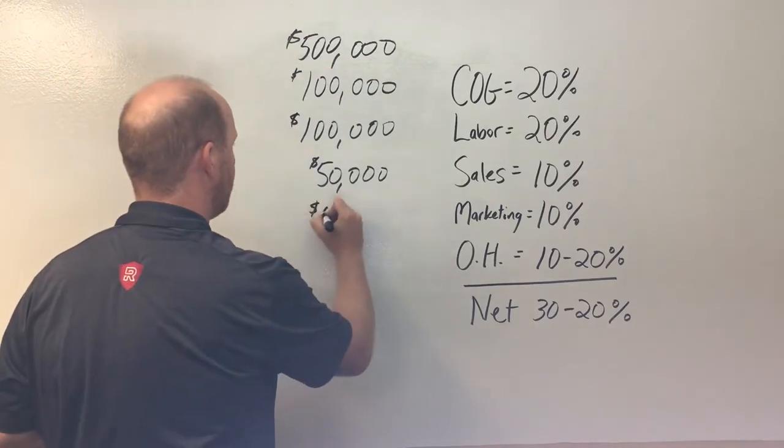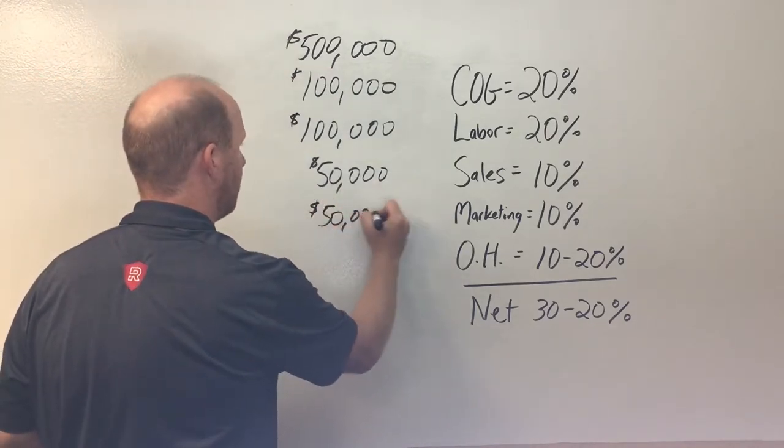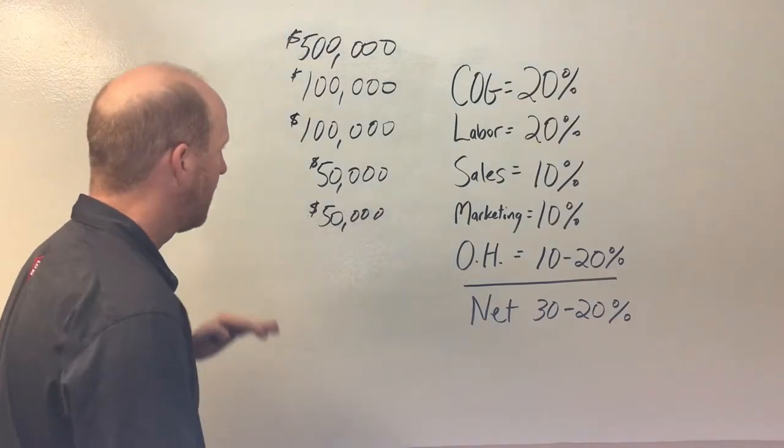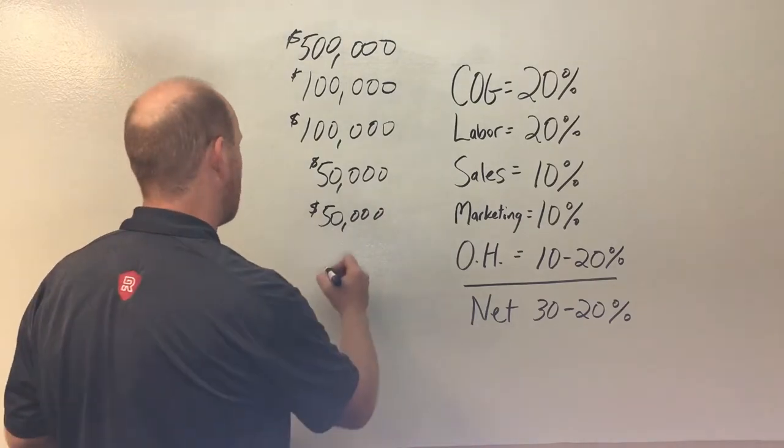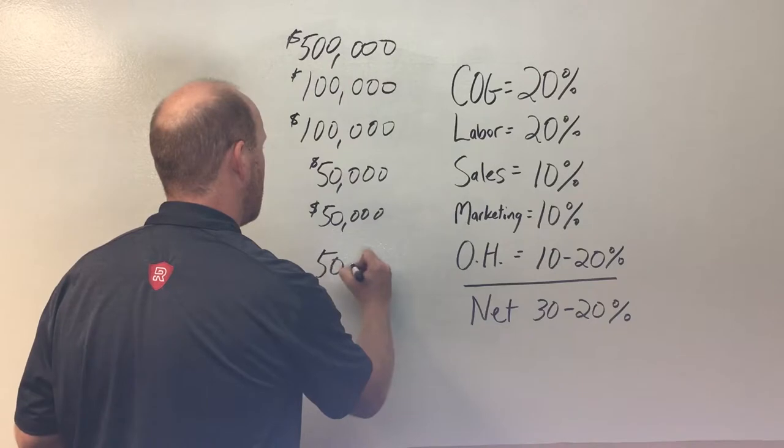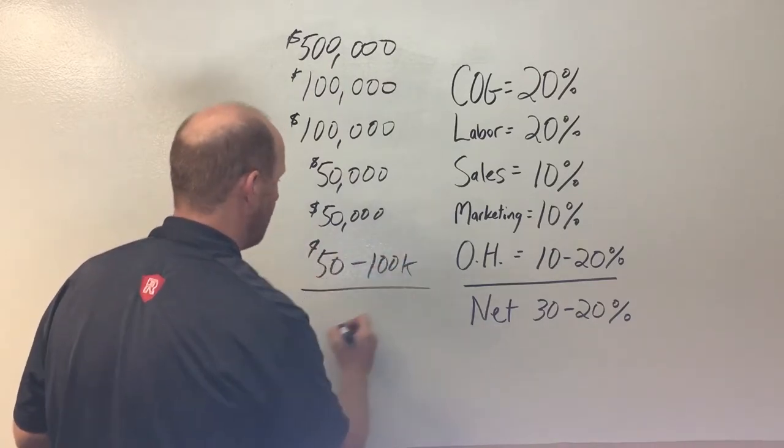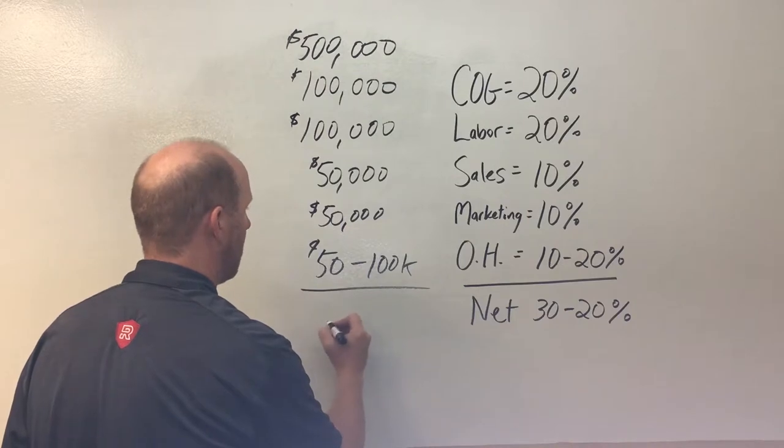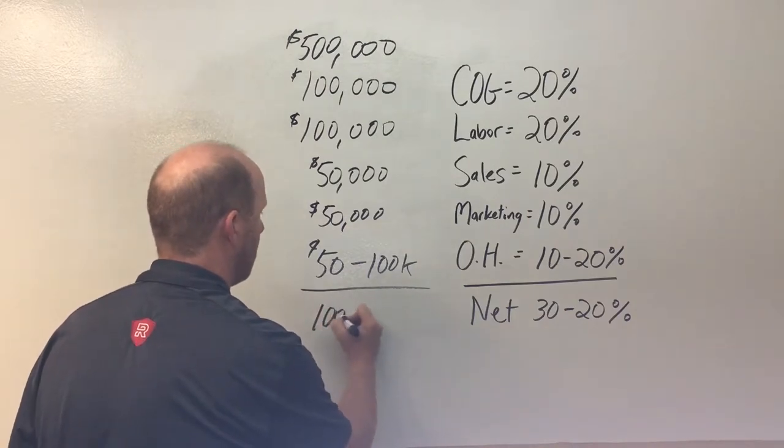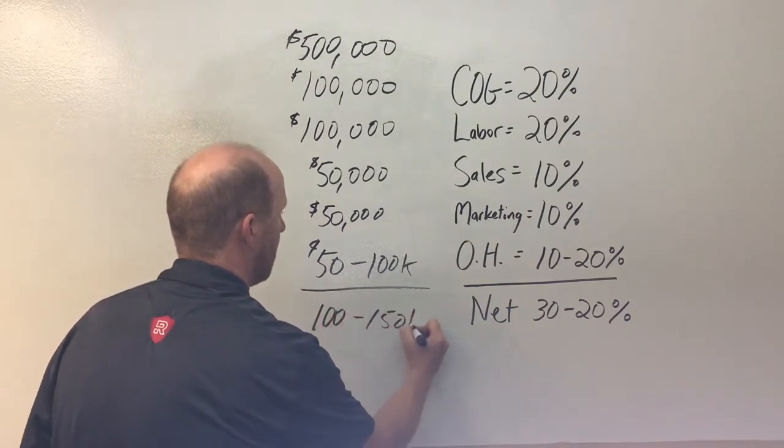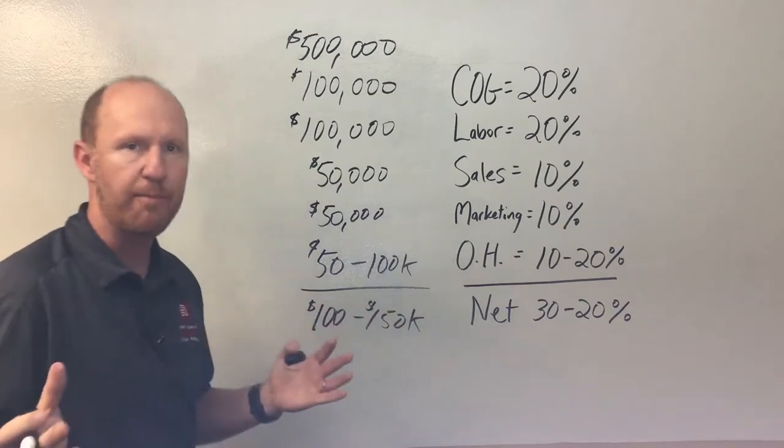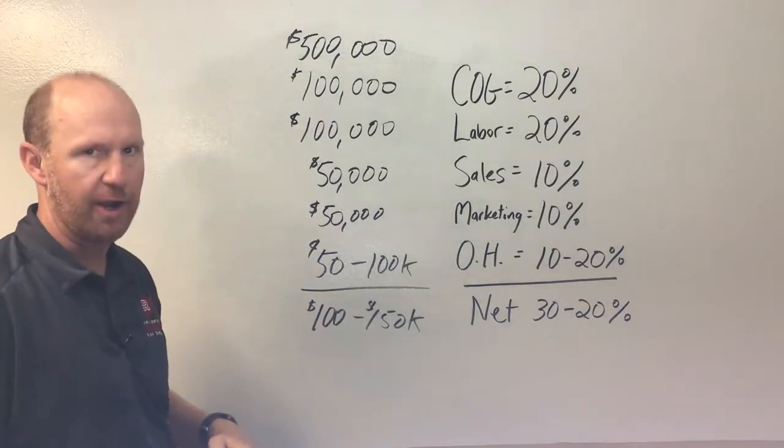Our marketing budget is $50,000 to drive leads our way. And then your overhead is going to range between 50 and $100,000 to give you that potential of 100 to $150,000 in net profit. So those are the numbers we're looking at here.